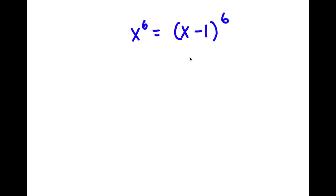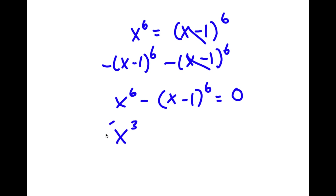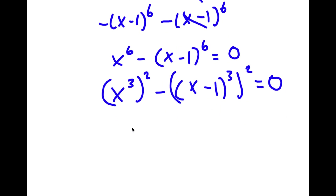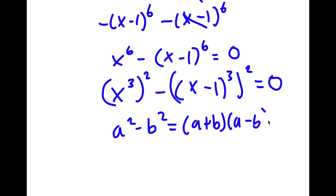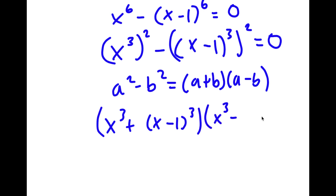In this problem, I have x to the power of 6 is equal to x minus 1 to the power of 6. I'm going to subtract x minus 1 to the power of 6 on both sides, giving x to the power of 6 minus x minus 1 to the power of 6 is equal to 0. I'll rewrite this as x to the power of 3 squared minus x minus 1 to the power of 3 squared equals 0. Applying the difference of squares, I get x cubed plus x minus 1 cubed times x cubed minus x minus 1 cubed equals 0.